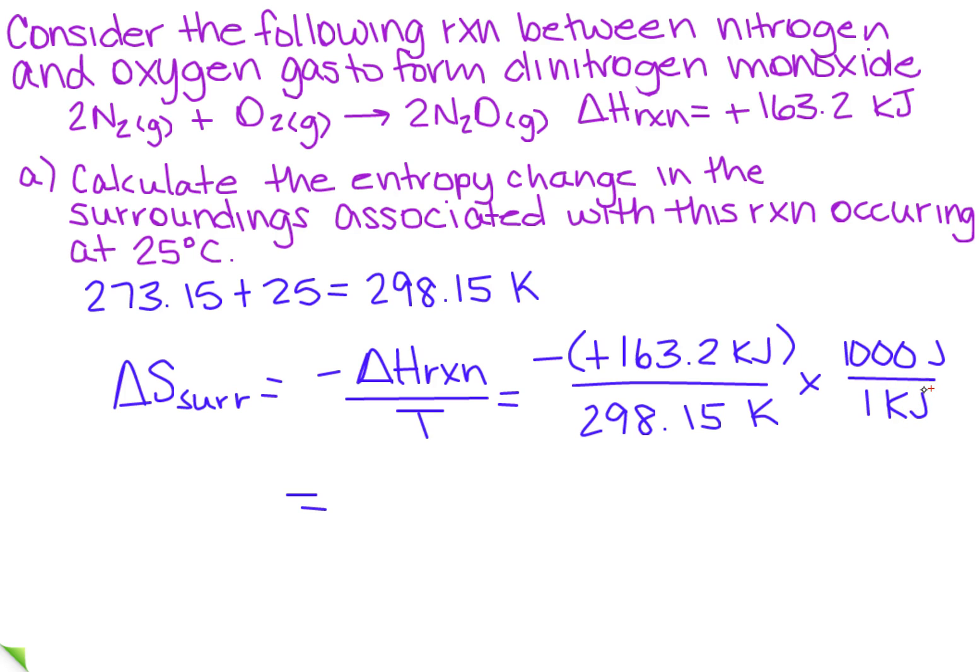And I'm going to do this calculation, and I get minus 547.3754821, but I only want how many significant figures? The only one from the problem is this 163.2, so that's four significant figures. So my final answer is going to be minus 547.4 joules per Kelvin.